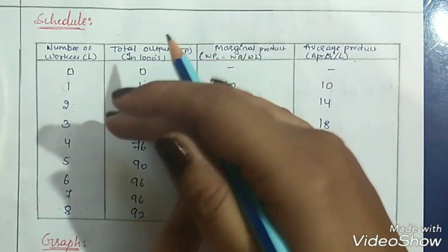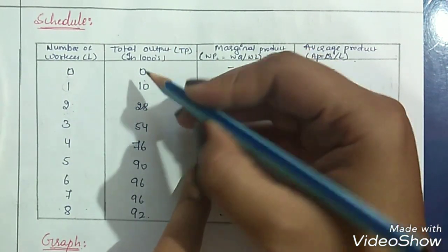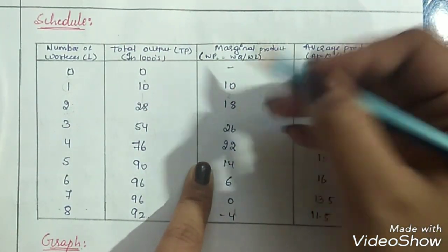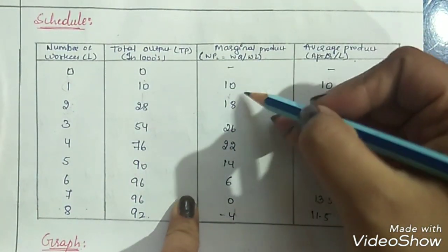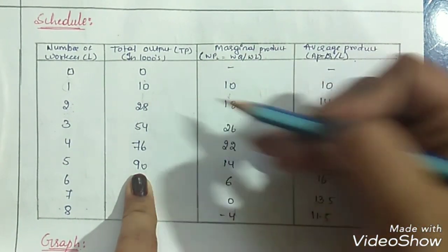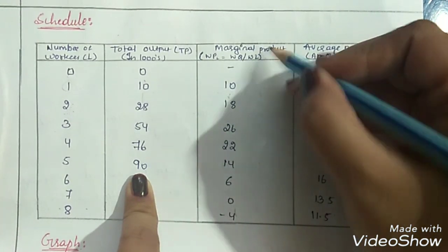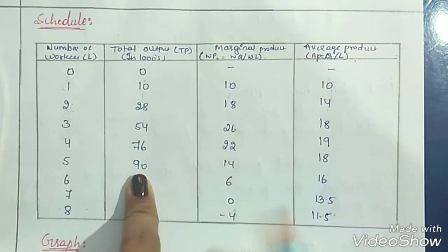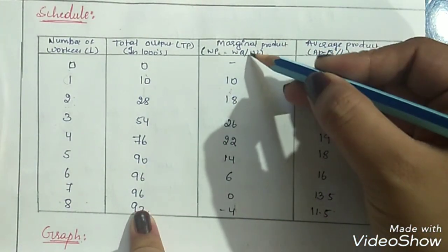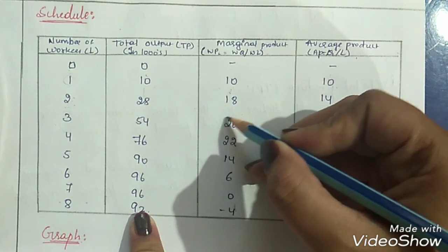So 18 extra cars have been produced, making 18 our marginal product. The difference between 54 and 28 is 26, so 26 is the marginal product for 3 units of labor. As total product increases, marginal product will also increase, but only up to a certain point.